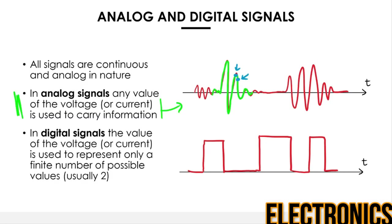In digital signals, on the contrary, the value of the voltage or current is used to represent only a finite number of possible values — usually only two. The voltage moves rapidly between two possible values, called high and low, or most commonly one and zero. So you might have zero at the beginning, then one, zero, one, zero, one, zero.